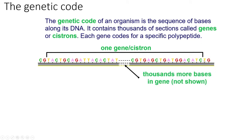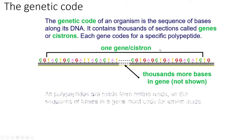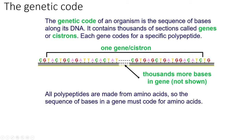In the image here, we have a sequence of bases. The specific order of that sequence forms a single gene. Genes can vary in size massively — there could be thousands more bases. That gene could code for a protein that carries out a specific function. All polypeptides are made from amino acids, so this sequence of bases must put the amino acids in the right order.